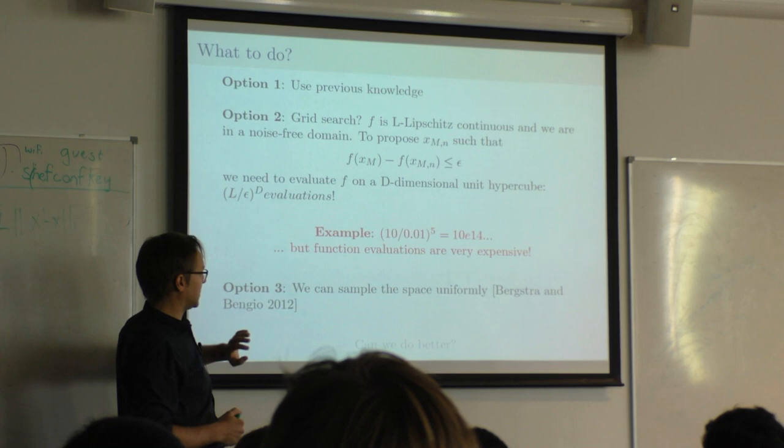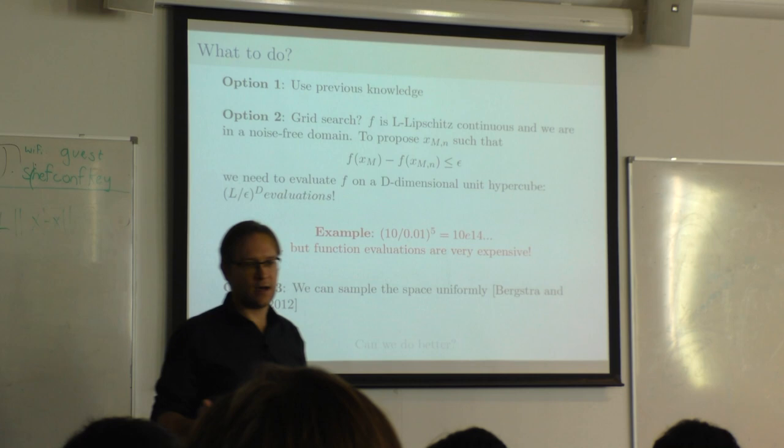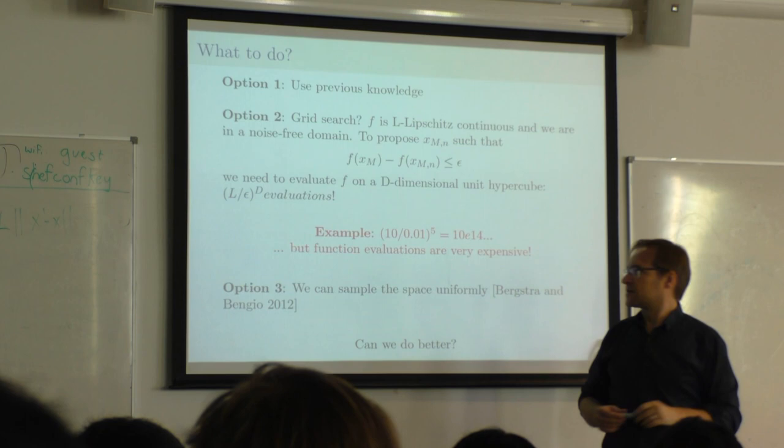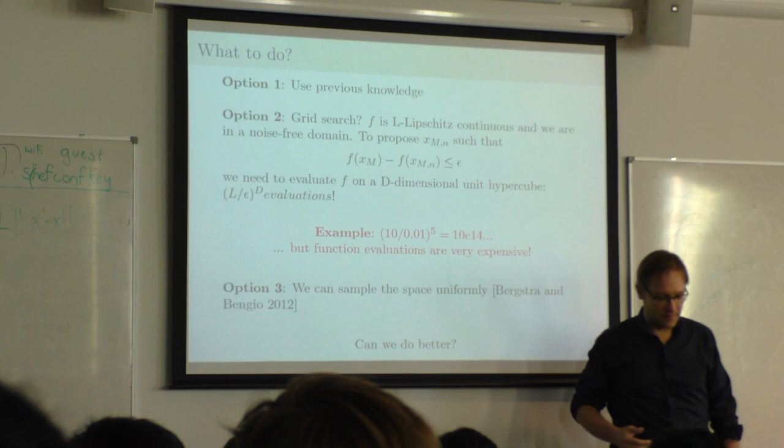The issue with both grid search and random search is that we are not using what we actually know about the problem — what we know from Gaussian processes. So the question is: can we come up with a better formalism that reduces the number of evaluations needed to find the minimum of a function?